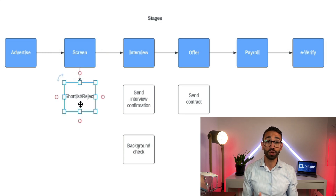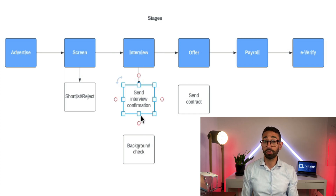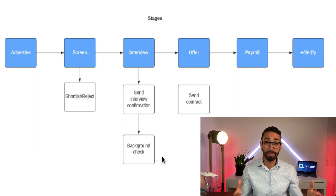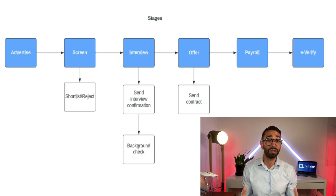For example, in the screening stage, you'll review candidate applications to decide whether to shortlist or reject them. Then in the interview stage, you'll probably send an interview confirmation by email or SMS, or even a background check consent form. In the offer stage, you'll send a DocuSign contract. The issue is not only doing all of these tasks, but also keeping track of whether they were done — trying to remember which stage each candidate is in. This can be a total mess.